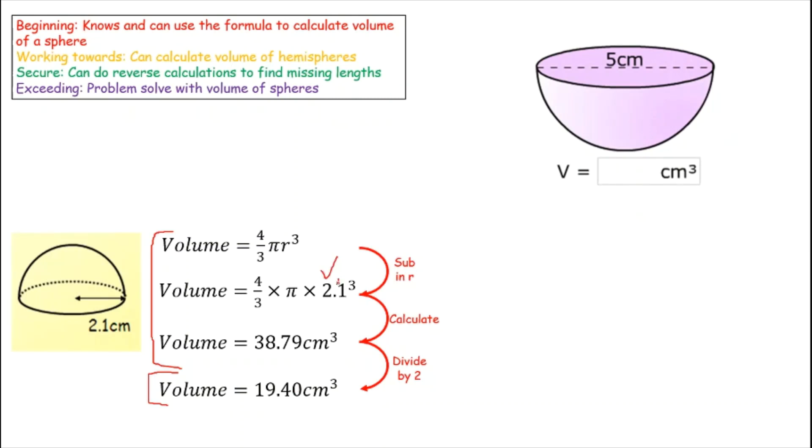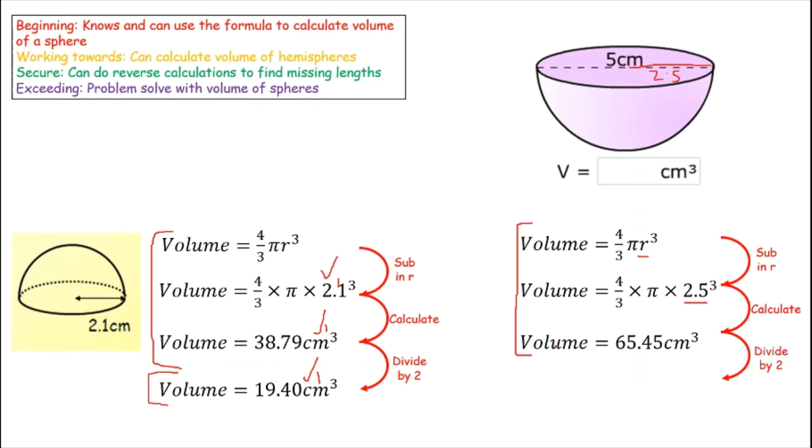For the question on the right, same thing, but be very careful. I've given you a diameter, you need a radius, so I'm going to use 2.5 because my formula requires a radius, not a diameter. So I've substituted in a radius of 2.5, which is half of the diameter given. Put it through my calculator and get 65.45. Again, that was a full sphere. We need a half sphere, a hemisphere. That is my hemisphere, 32.7.